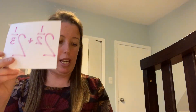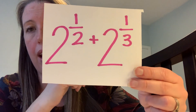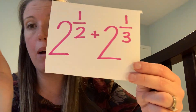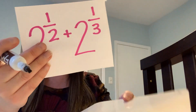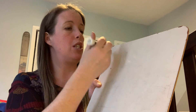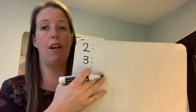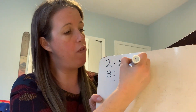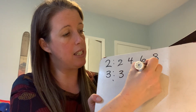Let's try another one. My next one is going to be two and a half, and I'm going to add two and a third. I don't have a common denominator, which means I have to make one. I'm going to find something these two denominators have in common by listing multiples of two: 2, 4, 6, 8 — and multiples of three: 3, 6, 9, 12.